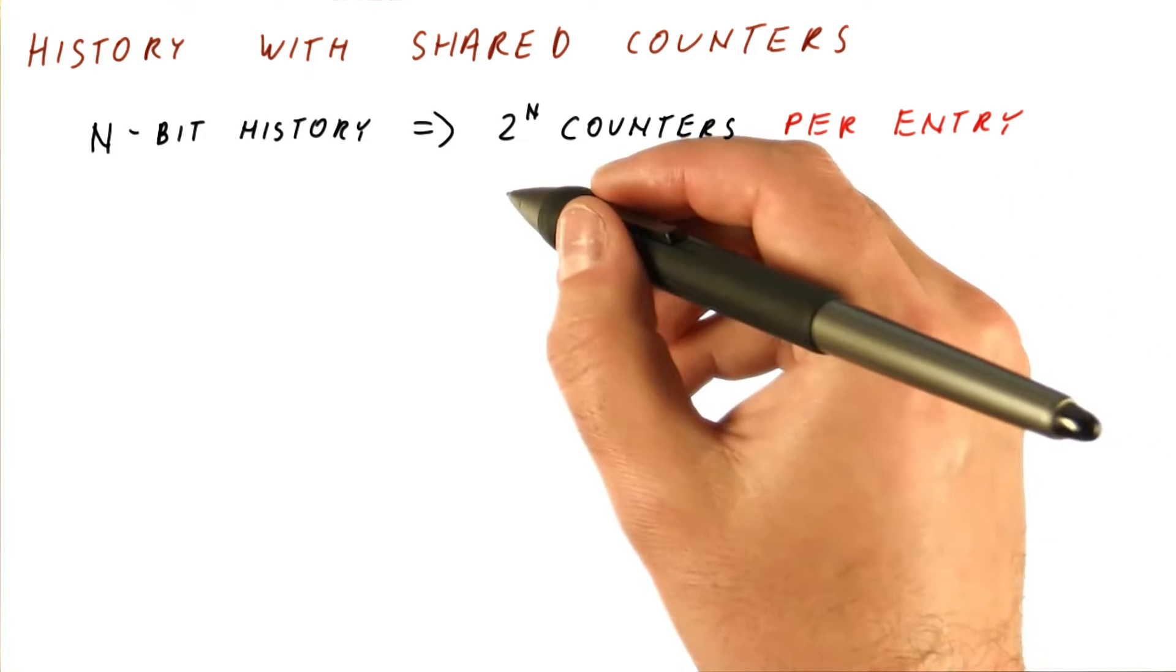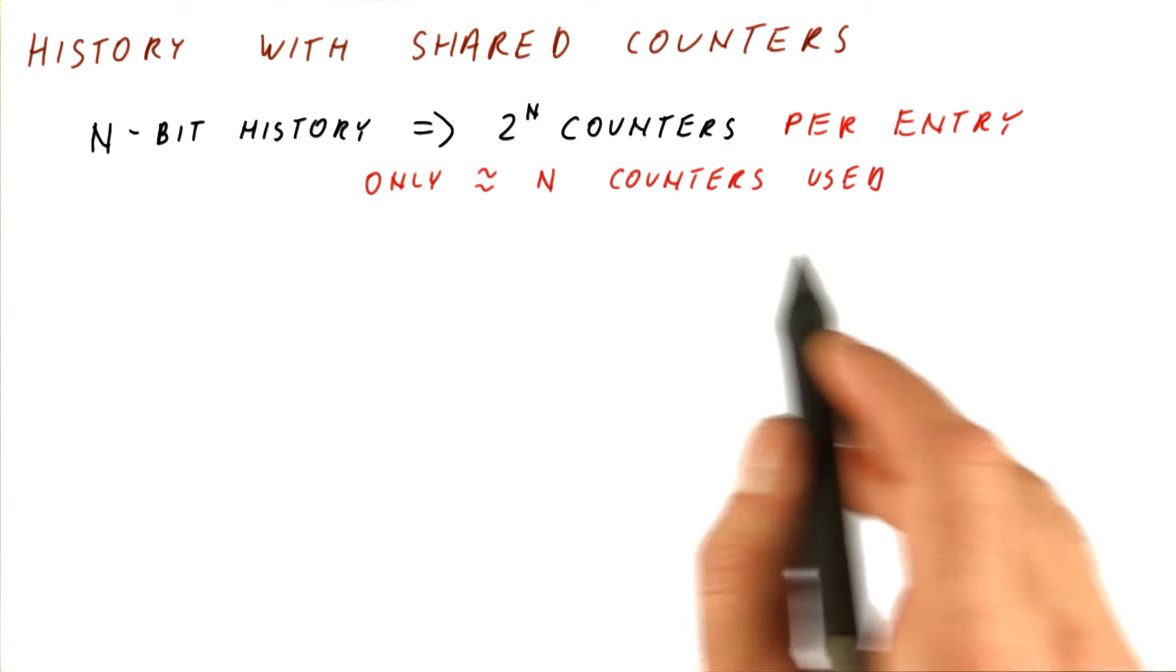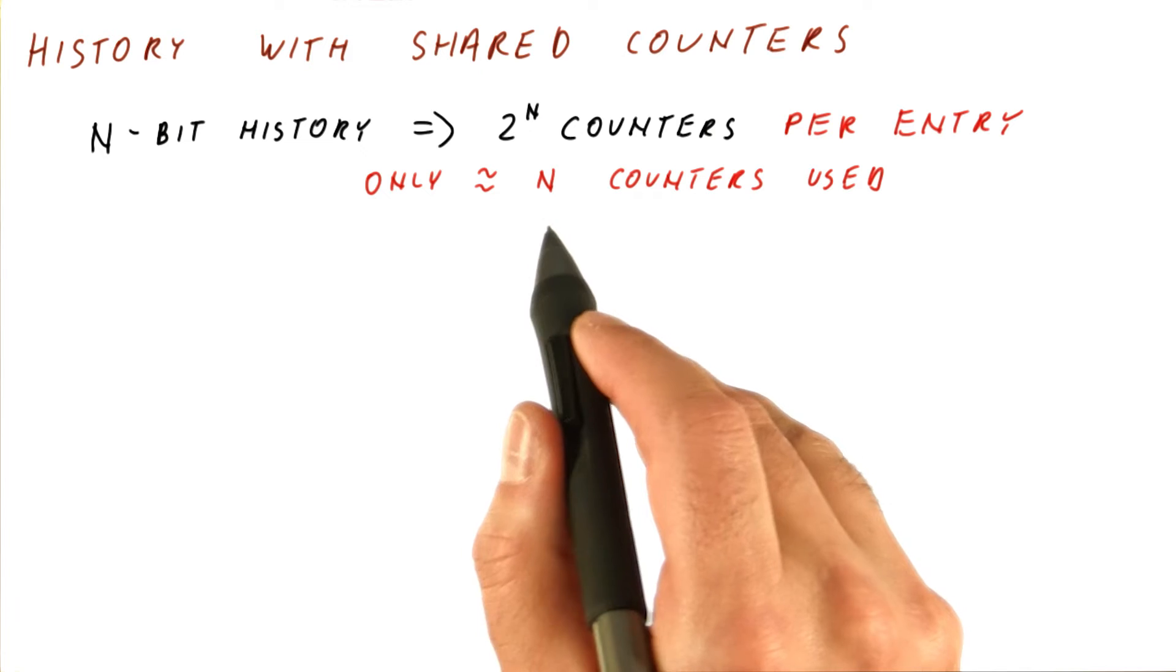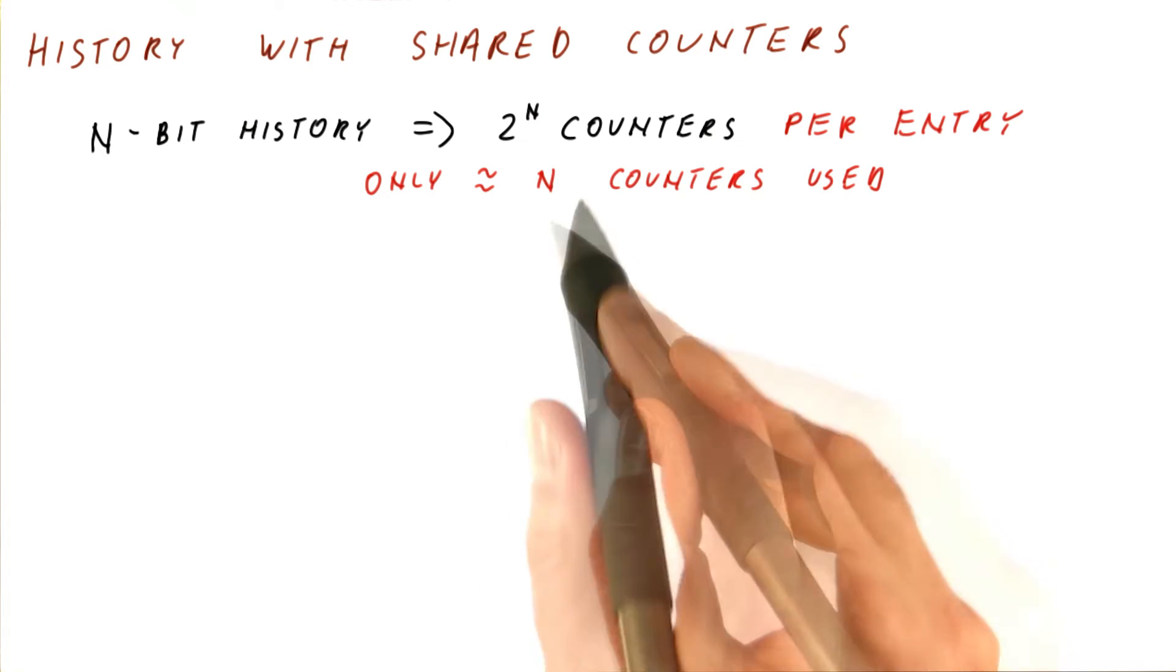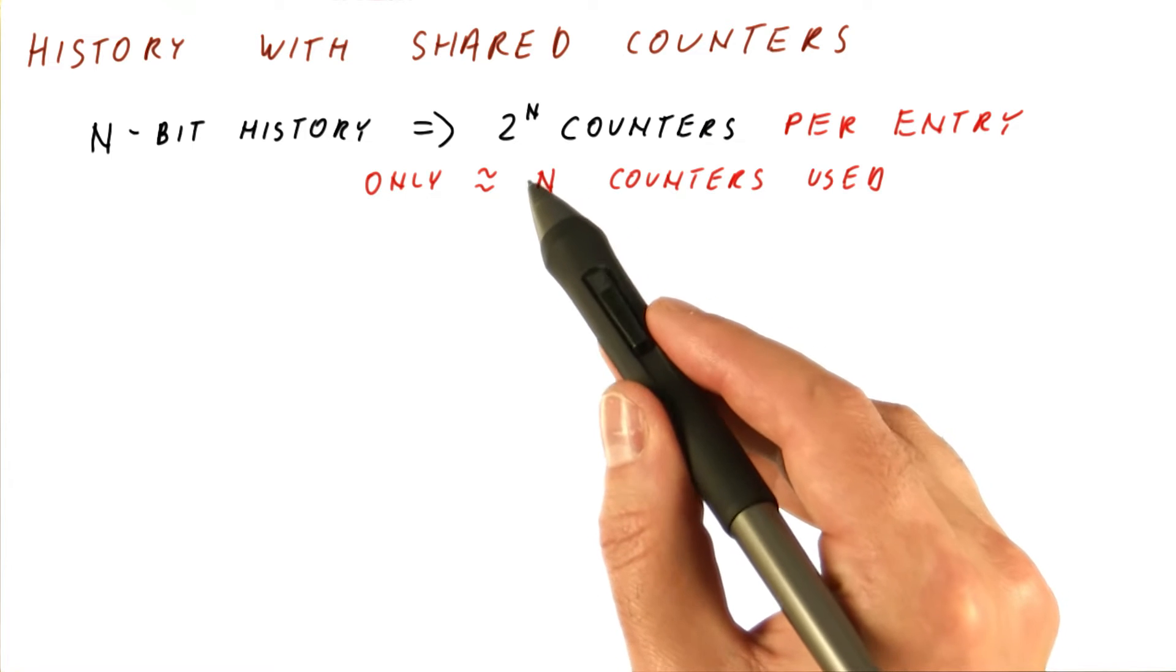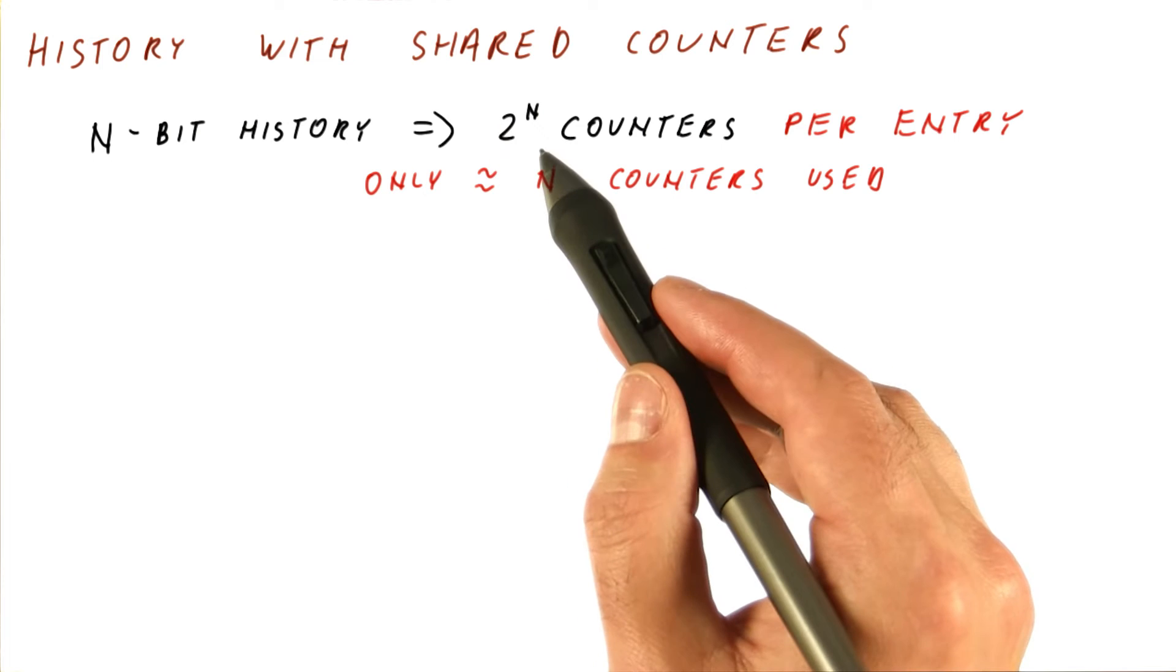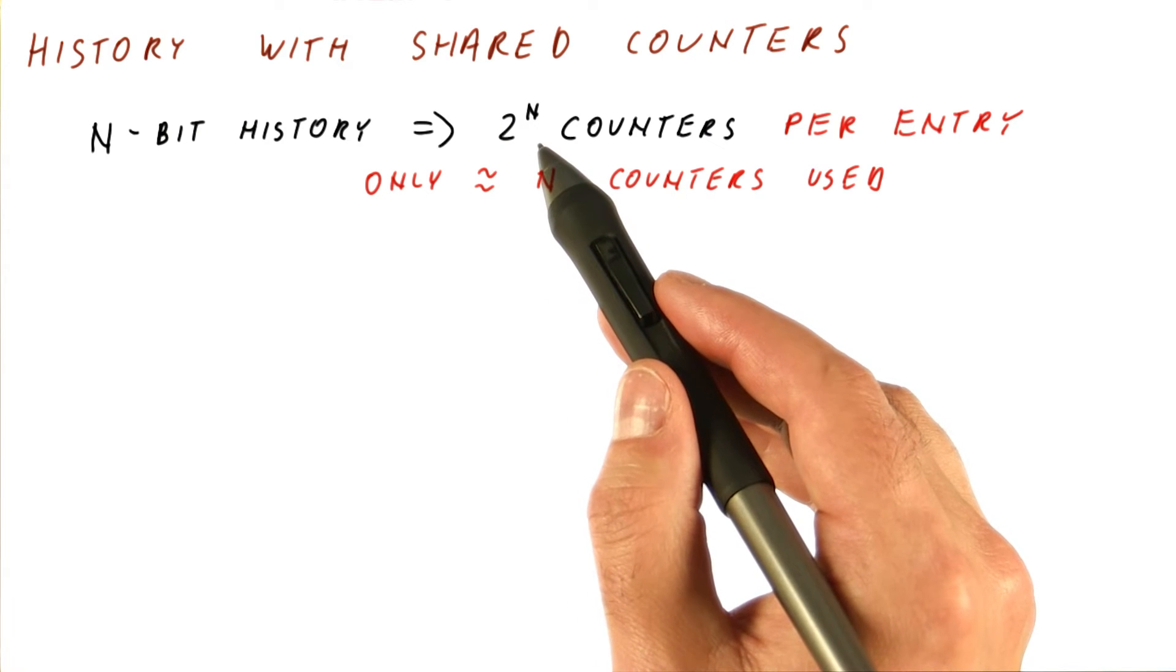And we also know that for repeating patterns, only about n counters out of 2^n are really used. In reality, we are using about n plus one, but basically the important thing is that we are using a number of counters proportional to the size of the history, but we need to have 2^n counters because we don't know which histories will be important.